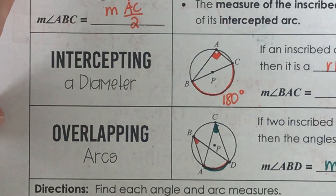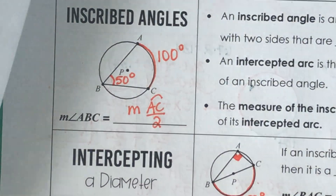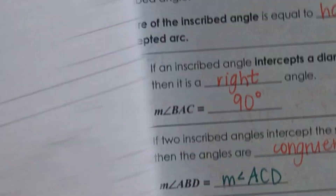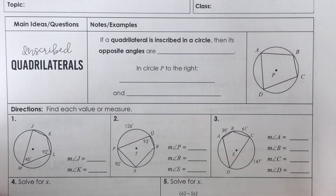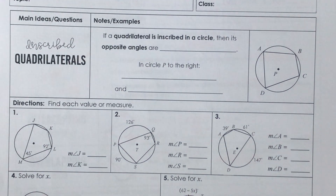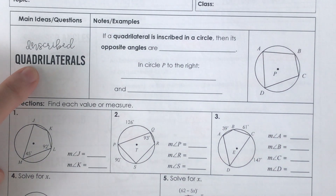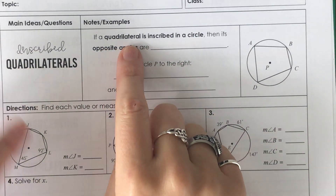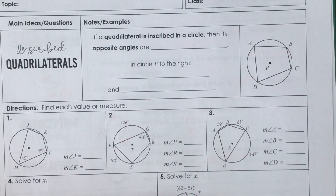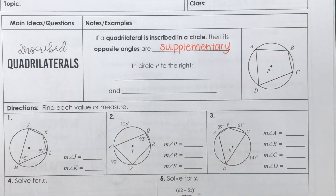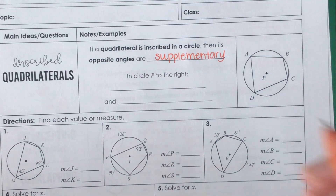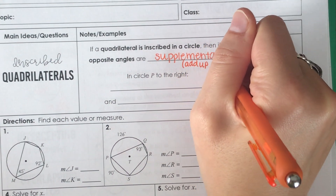We are now finished with inscribed angles, intercepting diameters, and overlapping arcs, so we're moving on to our last section: inscribed quadrilaterals. Inscribed literally means inside of, so we're talking about a four-sided figure that is inside of a circle. If a quadrilateral is inscribed in a circle, then its opposite angles are supplementary, meaning they add up to 180 degrees.